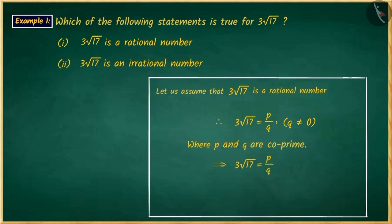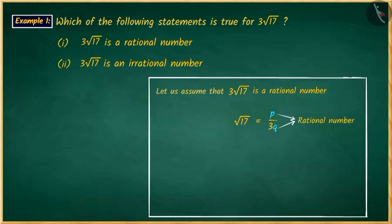If we rearrange this, we will get square root of 17 is equal to p upon 3q. You may remember that the division of rational numbers is also a rational number. Thus, we can say that since p and q are rational numbers, then the value on the right side, which is p upon 3q, is also a rational number. Therefore, the square root of 17 will also be a rational number.